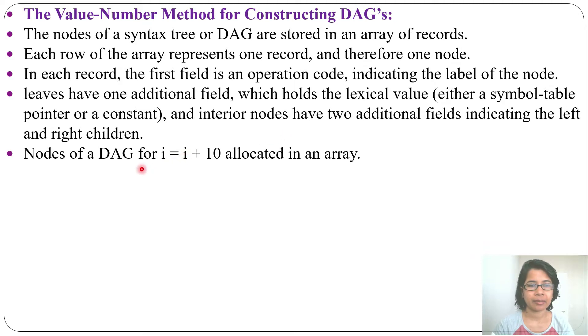Let's see one example. I will construct a DAG for i = i + 10. So we will take one node for i, another node for 10, and we will add these two. So plus, for plus i will be its left child, 10 will be its right child. Then i = i + 10. We already have i node so we will reuse that. We will just create a node for equal symbol and its left child will be i, right child will be plus. Now this is a DAG for i = i + 10.